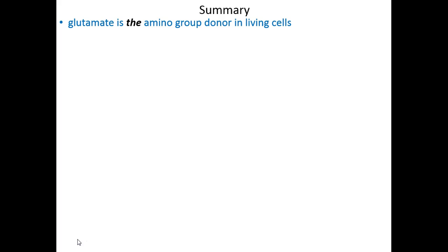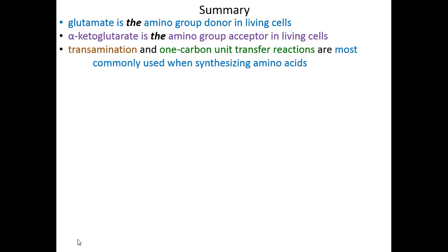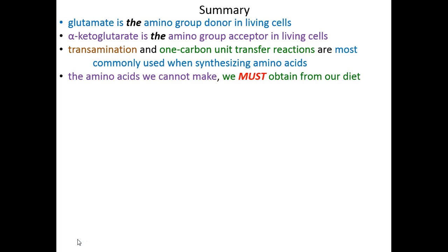To summarize what we talked about: we started with the idea of an amino group shuttle, with glutamate as the amino group donor in living cells and alpha-ketoglutarate as the amino group acceptor. We have transamination reactions and one-carbon unit transfer reactions as the most commonly used reaction types for amino acid biosynthesis. The amino acids we cannot make, or can't make in high enough concentrations, we must obtain from our diet — those are the essential amino acids. We will now switch gears in the last chunk of this lecture series to talk about the catabolism of amino acids, how we get rid of nitrogen-containing compounds without killing cells with ammonia, and we will see arginine show itself again as part of the urea cycle.